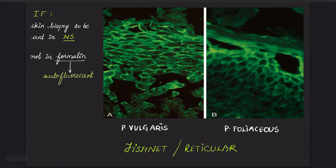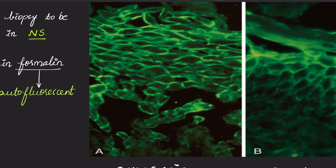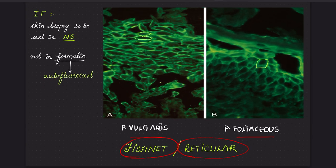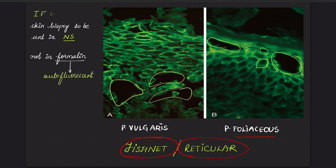Looking at immunofluorescence studies, both pemphigus vulgaris and pemphigus foliaceus show a fish net or reticular pattern, where only the plasma membranes of the keratinocytes are highlighted. The difference is that in vulgaris the splits are near the basal layer, whereas in foliaceus the splits are beneath the stratum corneum, and most of the immunofluorescence is highlighted in the stratum corneum layer.